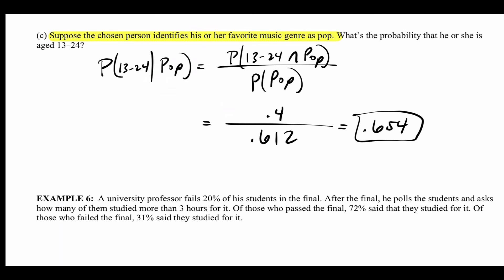Anytime you see 'given that,' or something that sounds like it, go right to the conditional probability formula — don't even think about it. You're going to see that whether it's a two-way table, Venn diagram, or tree diagram.